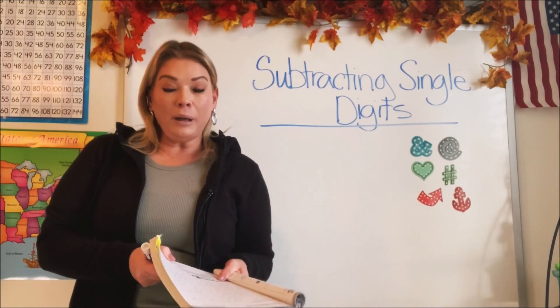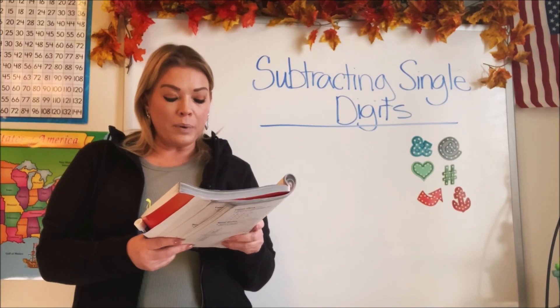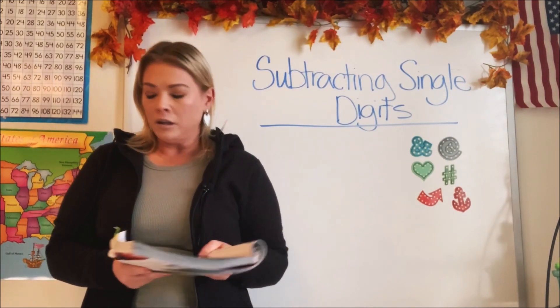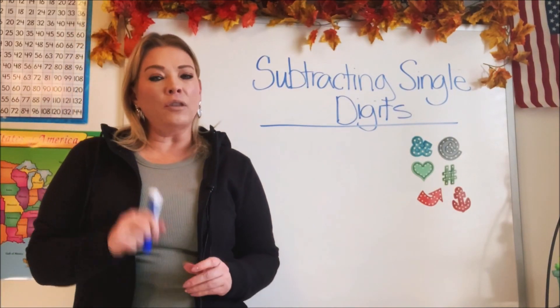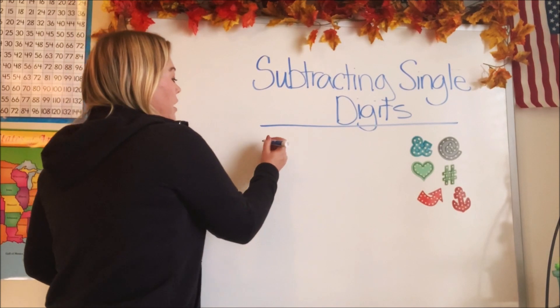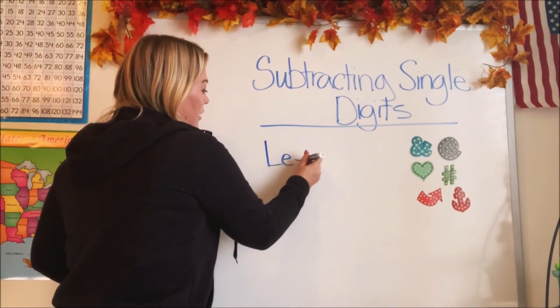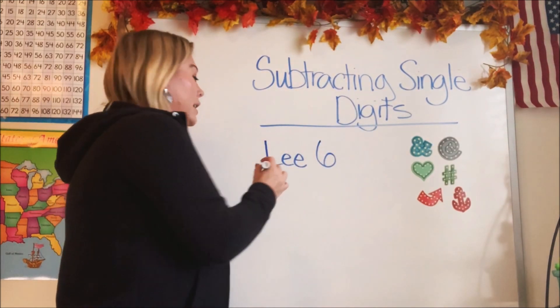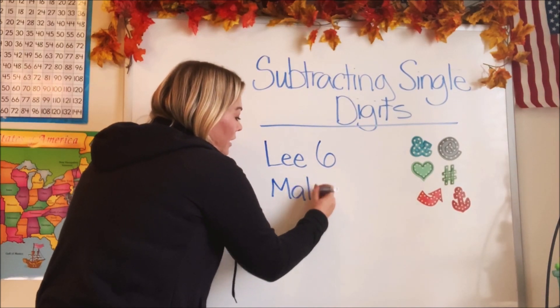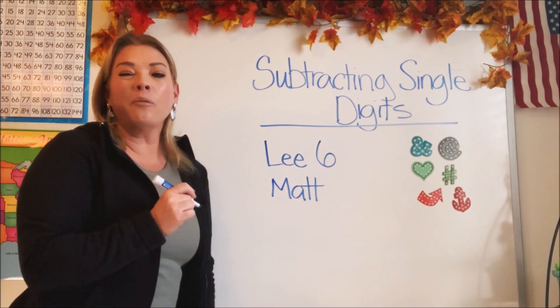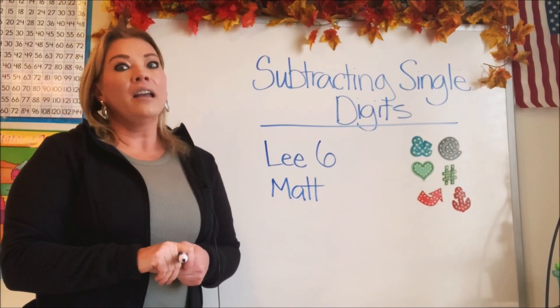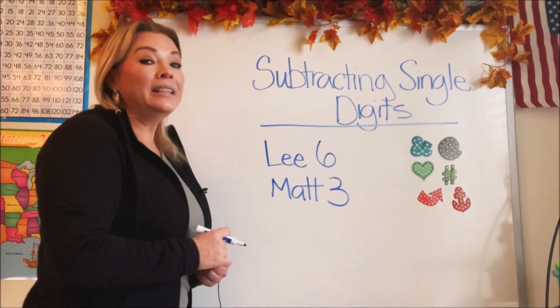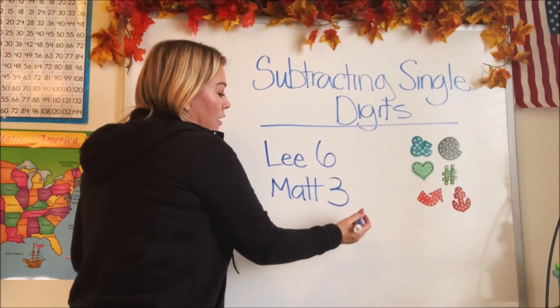It says Lee has six pencils, but he gives three pencils to his friend Matt. How many pencils does Lee have now? Let's write down the key parts we need to remember. So Lee, let's write his name. Lee has how many? He has six pencils, doesn't he? And he's going to give some to his friend Matt. So let's write Matt's name. And how many did he give to Matt? Do you remember? It was three, wasn't it? Good job. So we need to know how many is left when Matt takes three of them away.